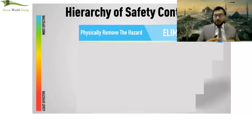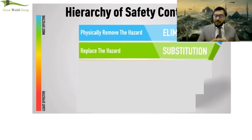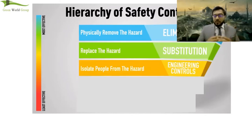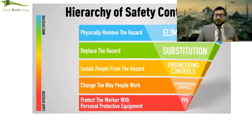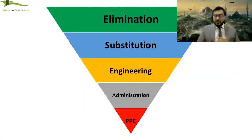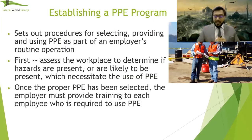The hierarchy of control: the first step is to eliminate — try removing the hazard entirely. If that's not possible, the next step is substitution — replace the hazard. Then engineering controls — isolate people from the hazard. After that, administrative controls — change the way people work, decrease duration and exposure. Finally, protect workers with personal protective equipment. So: elimination, substitution, engineering controls, administrative controls, and then PPE.